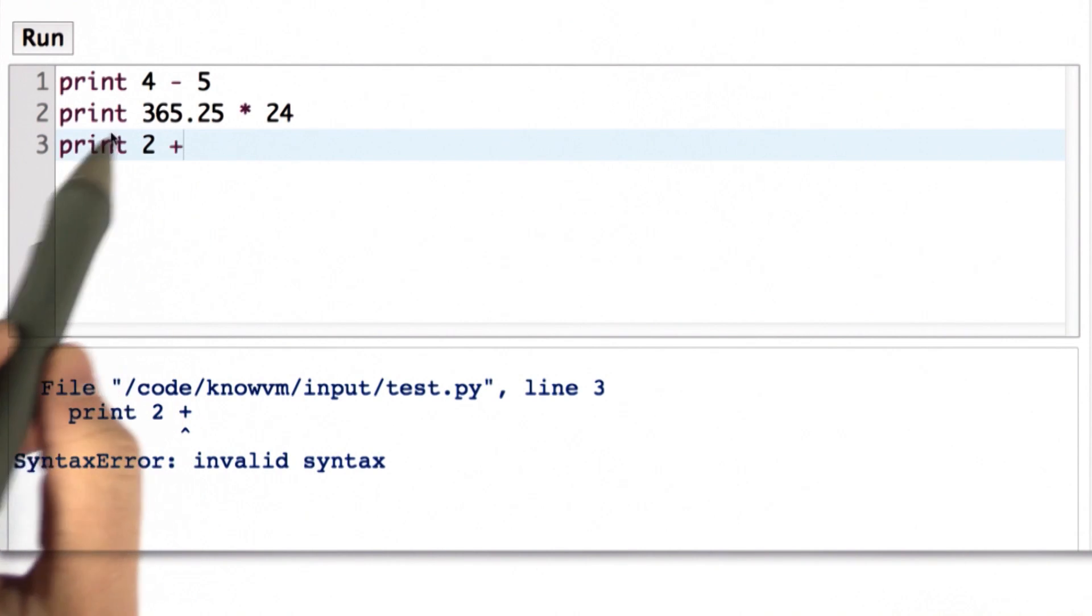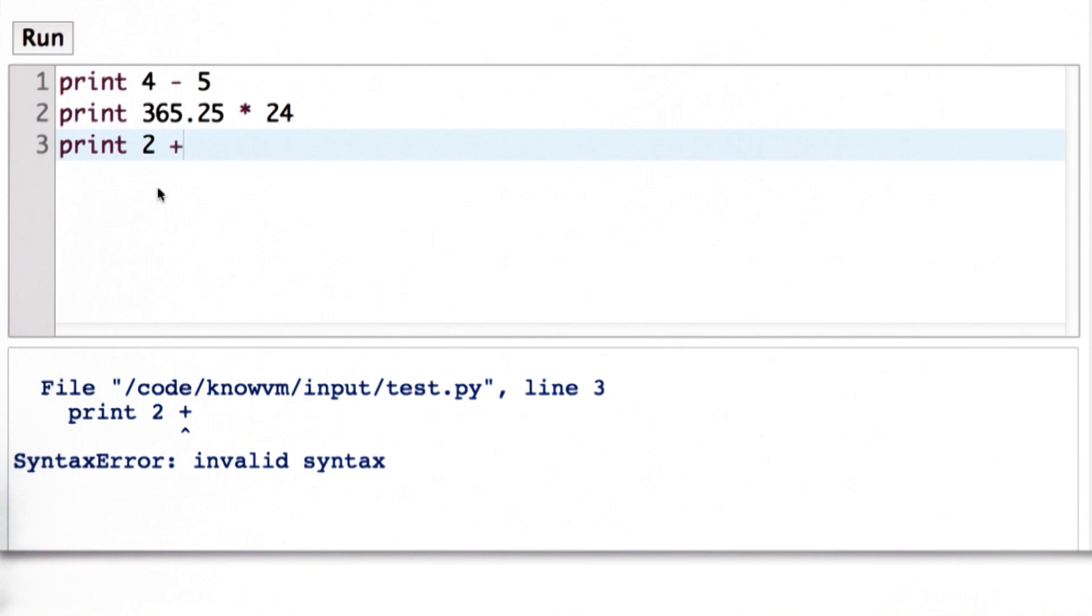If we said '2 plus' to someone in English, they might be able to figure out that means the same thing as 2. In Python, it needs to match the grammar exactly.